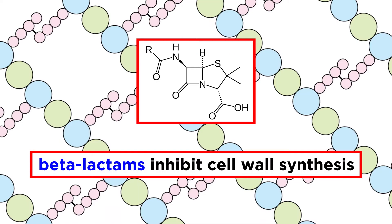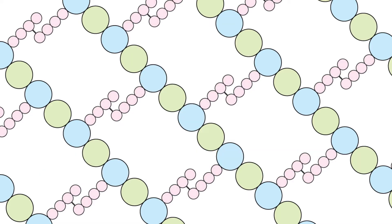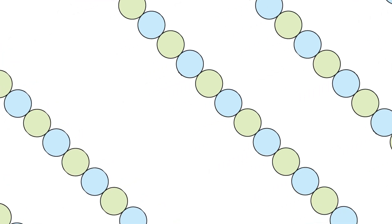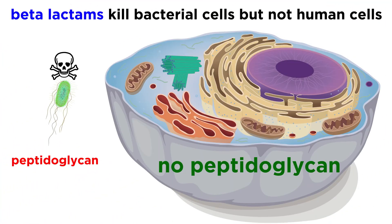Gram negative bacteria show up with more of a pink color. These structures maintain cell shape and determine what comes in or out of the cell. It is the cell wall that is the target of certain antibiotics called beta-lactams in killing certain pathogens. These substances inhibit peptidoglycan cross-linking, which destroys the bacterial cell wall, so beta-lactams kill bacterial cells without harming human cells, since human cells don't have peptidoglycan.